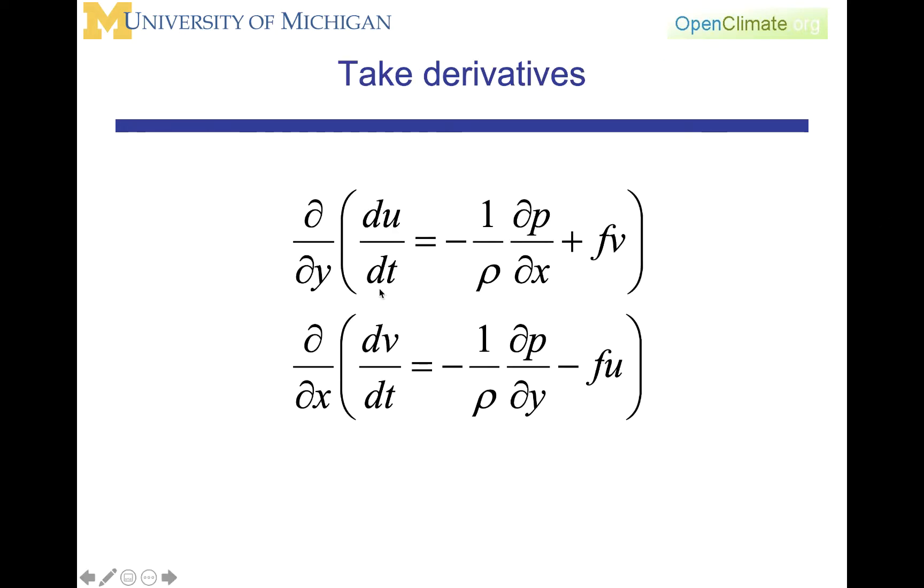What we're going to do is now take derivatives of these equations. Rather than multiplying by 2 or 5 or something, what we're going to do is we're going to take the first equation, the zonal momentum equation. We're going to take the y derivative of that equation. We're going to take the x derivative of the meridional momentum equation. You should see the strategy unfolding here. You're going to see that by changing the order of differentiation, we'll be able to imagine a du/dt turning into a d by dt of du/dy. Same for v. And then we'll be able to subtract the equations.